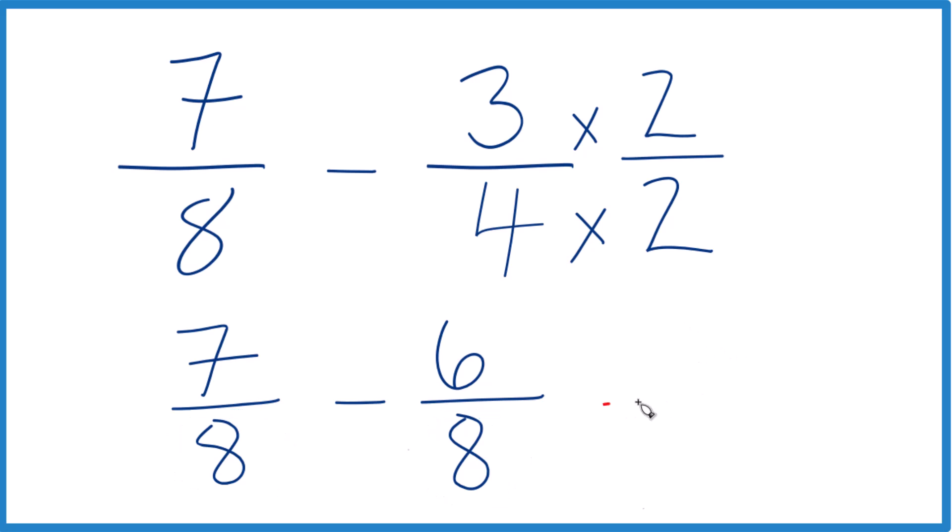So now all we do is we take 7 minus 6. That gives us 1. And we bring the 8 across and we get 1 eighth.